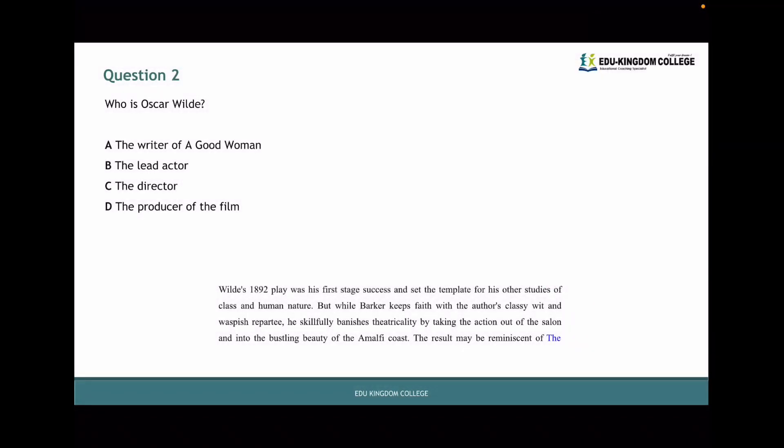Question two says, who is Oscar Wilde? We want to figure out who is Oscar Wilde. From the extract it says, Wilde's 1892 play was his first stage success and set the template for his other studies of class and human nature. But while Barker keeps his faith with the author's classy wit. Stopping right there. Barker now is the director. He is adapting the movie from Oscar Wilde's original. Because underneath it says, with the author's classy wit. Those are things that Barker maintains. So in essence, Oscar Wilde is the writer of A Good Woman.